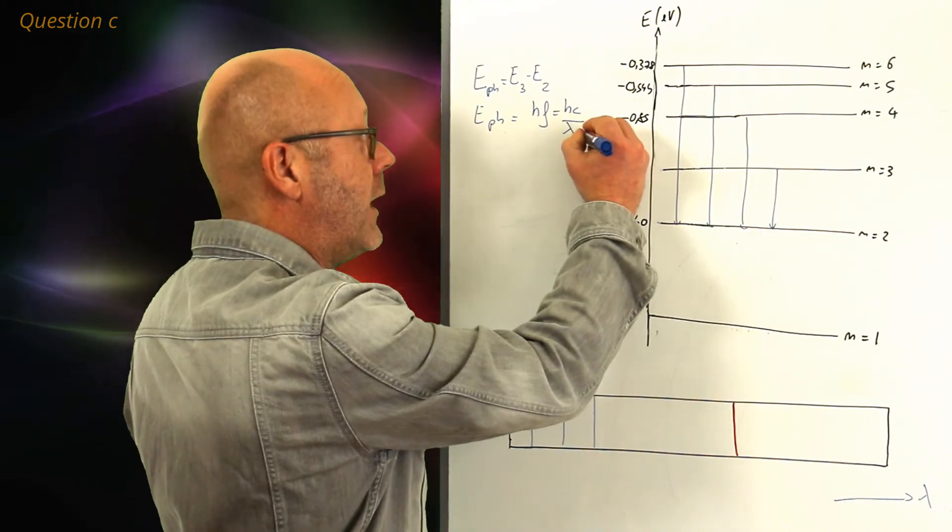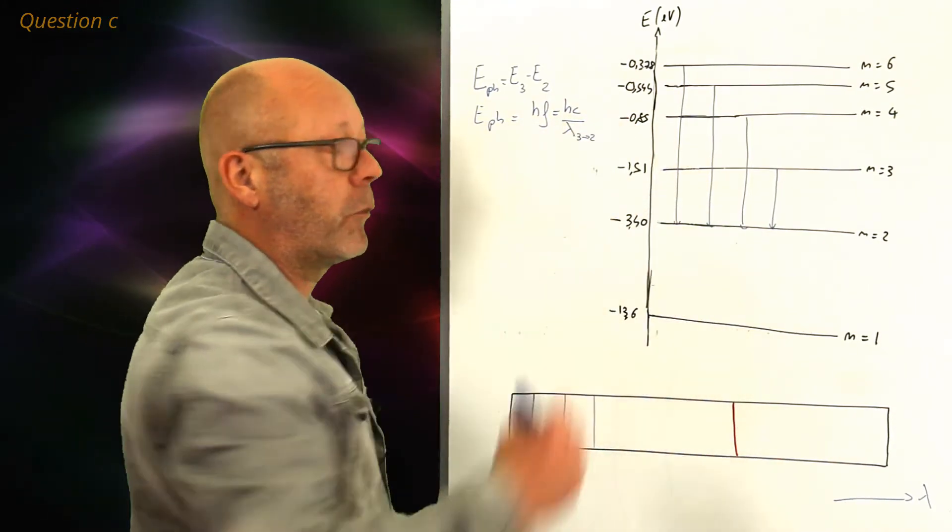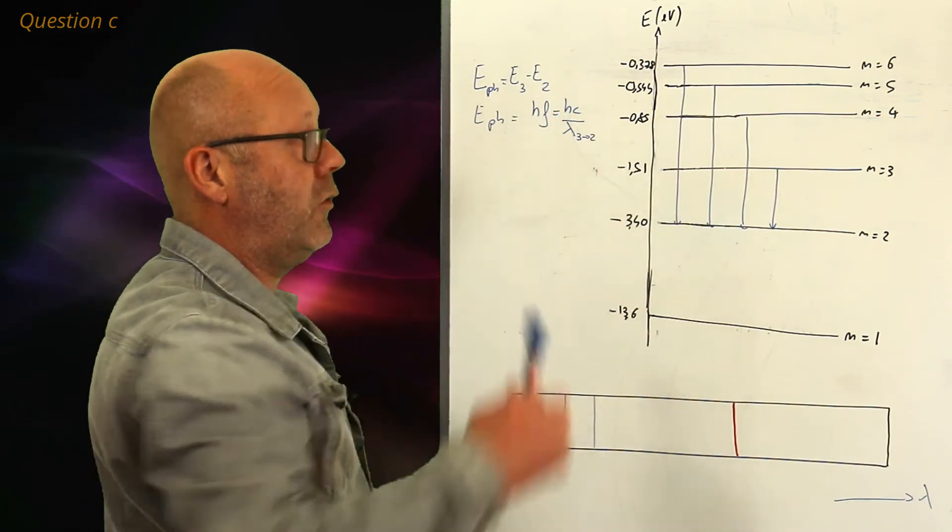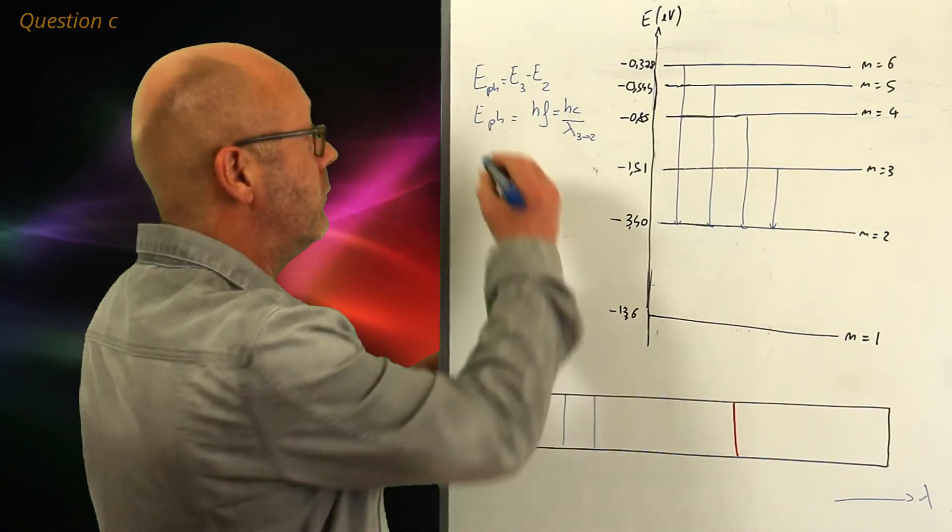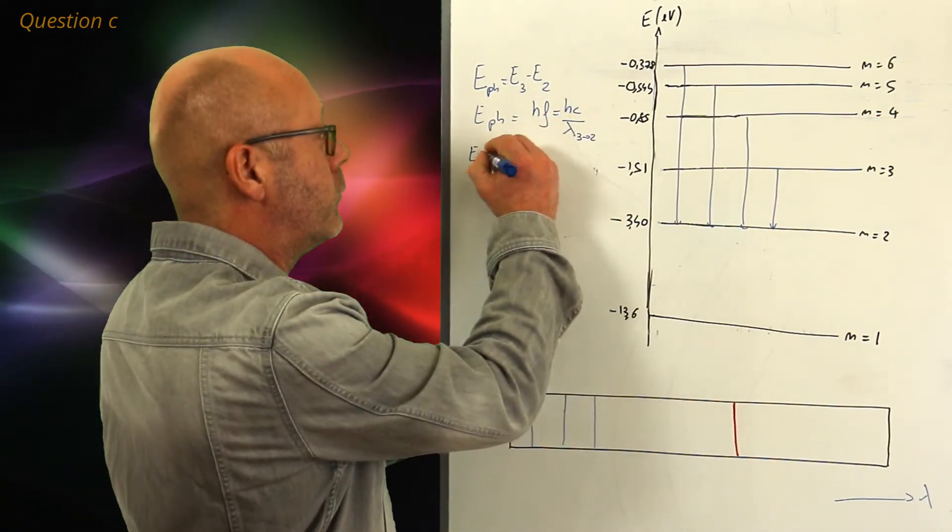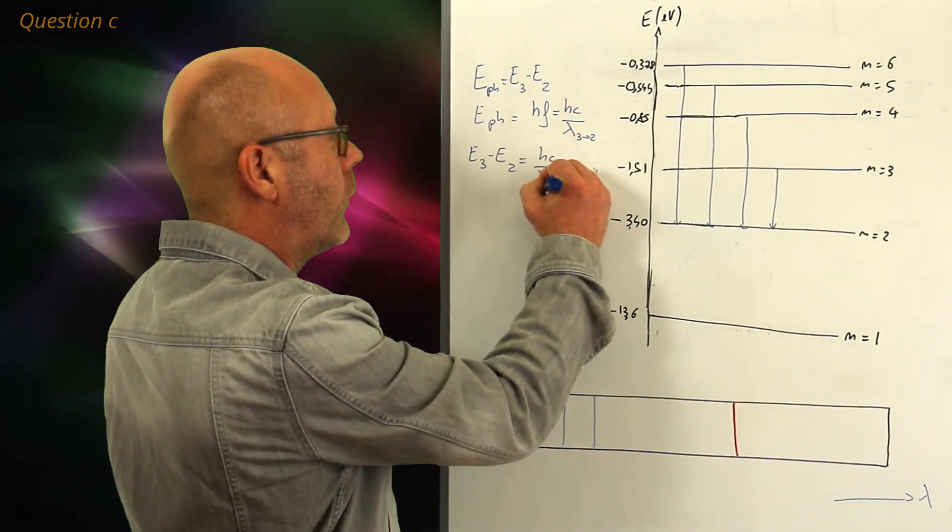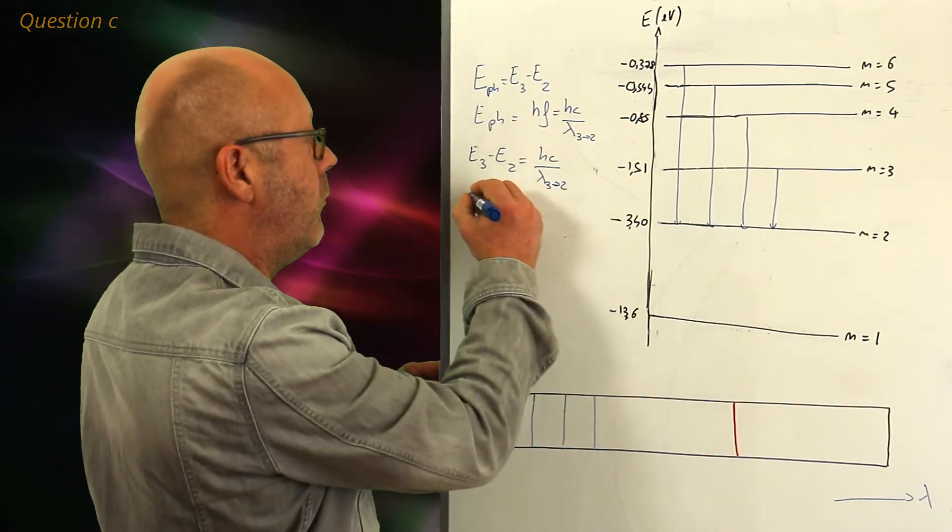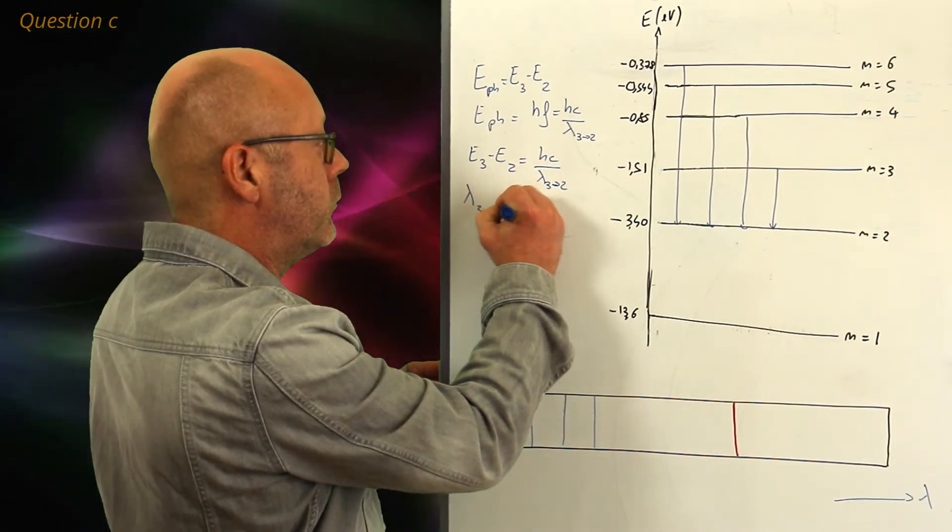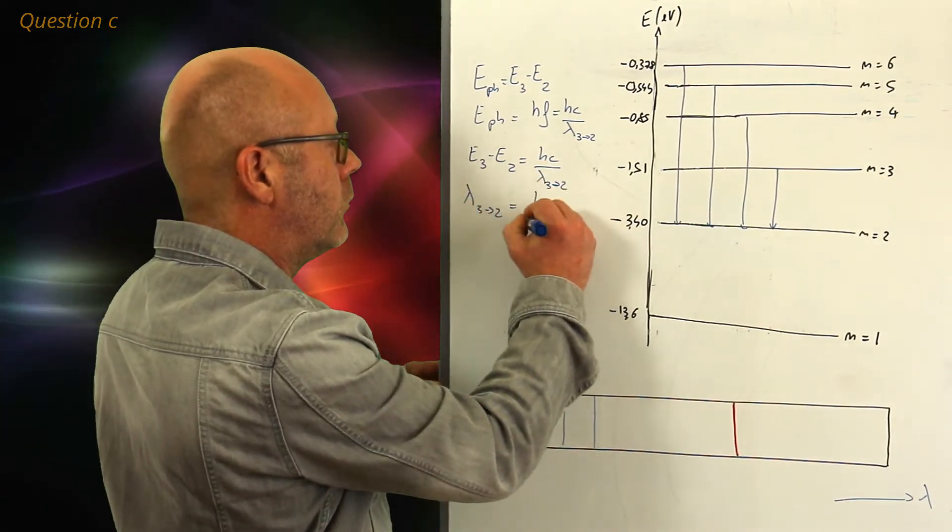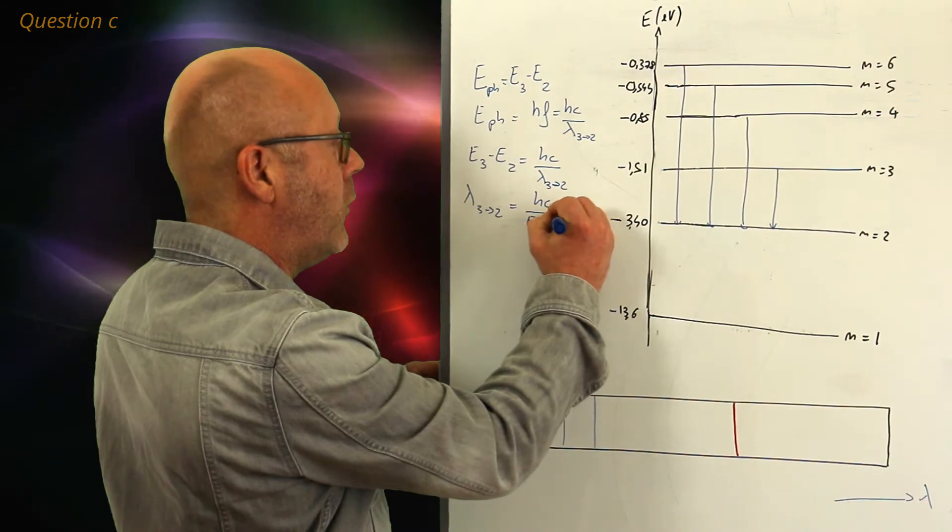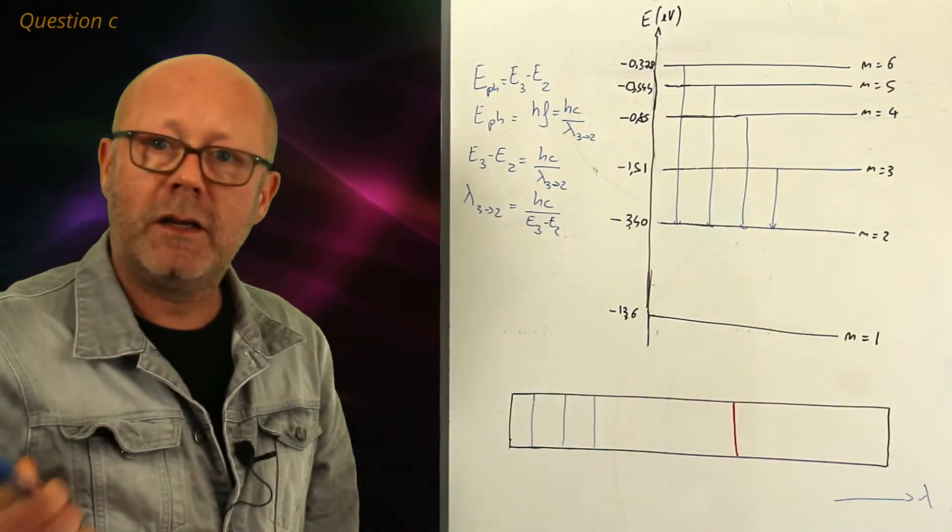So, I'll just note it down, lambda 3 to 2. If I equate these two and I rearrange the equation, so let's equate them. And now, rearrange the equation. I can calculate the wavelength corresponding to this transition.